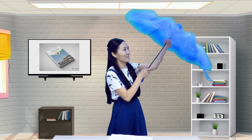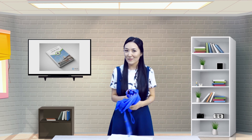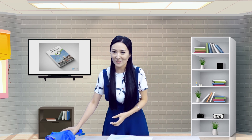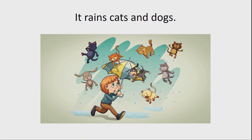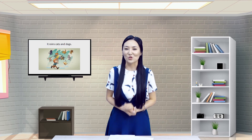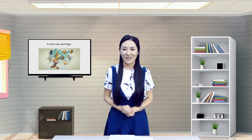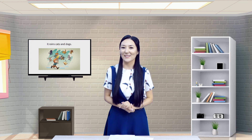Hello boys and girls! How are you today? It's wet and cold outside, isn't it? And it's raining cats and dogs. By the way, do you know what it means to rain cats and dogs? Have you ever seen cats and dogs dropping from the clouds like raindrops? It's impossible! So when we say it rains cats and dogs, it means it rains heavily. You'd better have an umbrella with you in order not to get soaked.